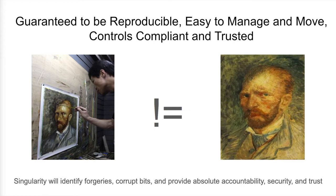Like all container systems, containers built with Singularity are tagged with a UUID as well as a SHA-SUM. But even with both of these together, that doesn't provide 100% trust or accountability. For that, you need cryptographic signatures, which Singularity supports in an innovative way and I will describe shortly.